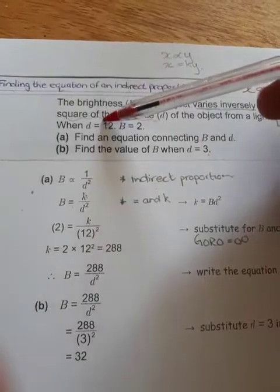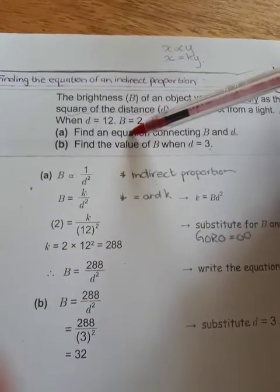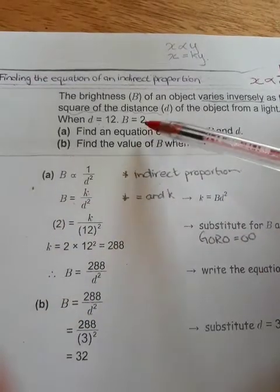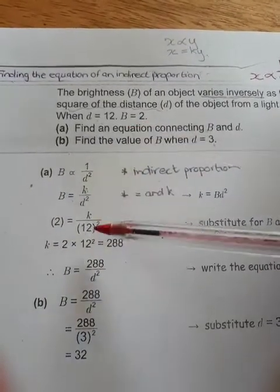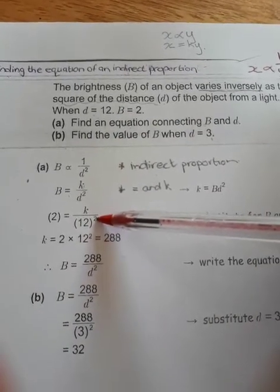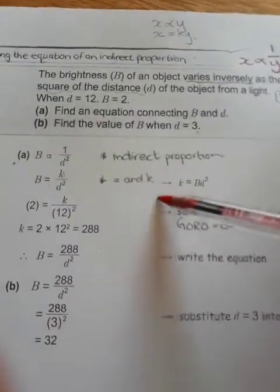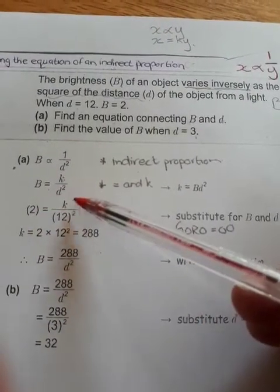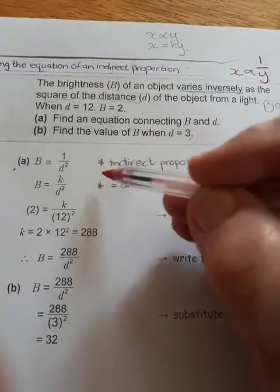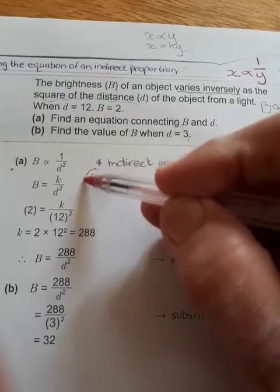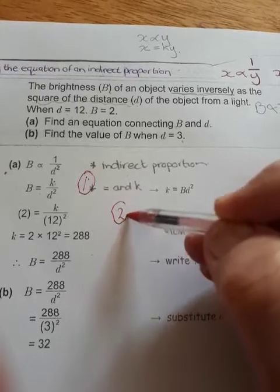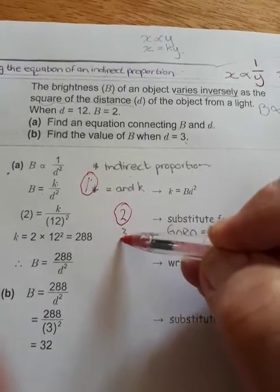Then they tell you when d is 12 and B is 2, find the equation. So instead of capital B, we will write 2, substitute. Instead of d, we will write 12, substitute. Then we solve for k, and k becomes 288. That is how we get the formula. Then step 2, substitute the values. Step 3 is calculate.